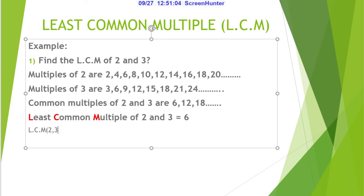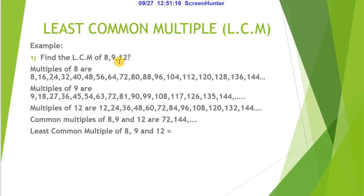Next example: Find LCM of 8, 9, and 12. We need to write the multiples of each number. Multiples of 8 are: 8, 16, 24, 32, 40, 48, 64, 72, 80, 88, 96, 104, 112, 120, etc. Multiples of 9 are: 9, 18, 27, 36, 45, 54, 63, 72, 81, 90, 99, 108, 117, 126, 135, etc. Multiples of 12 are: 12, 24, 36, 48, 60, 72, 84, 96, 108, 120, 132, 144, etc.